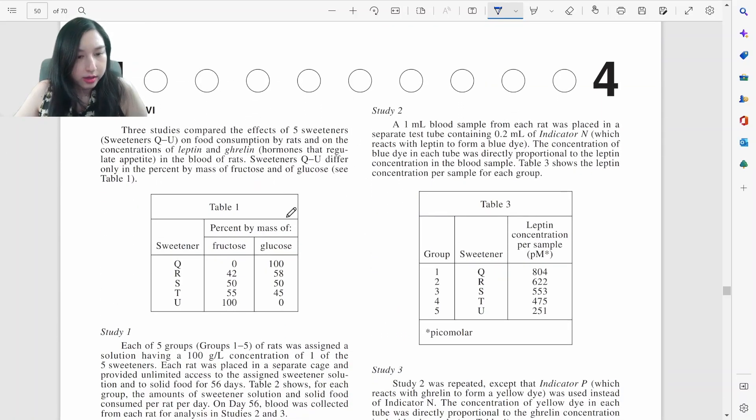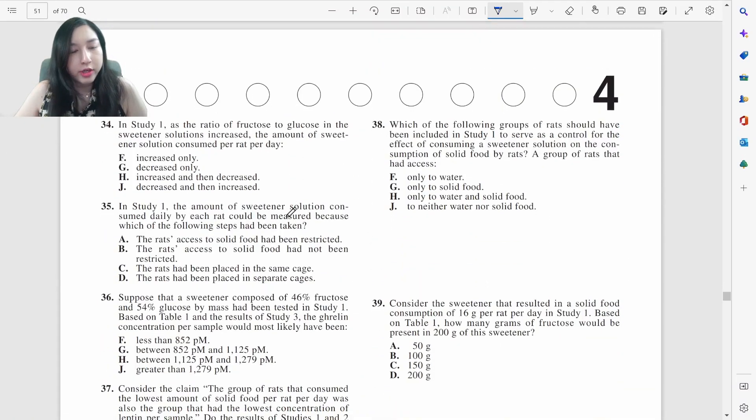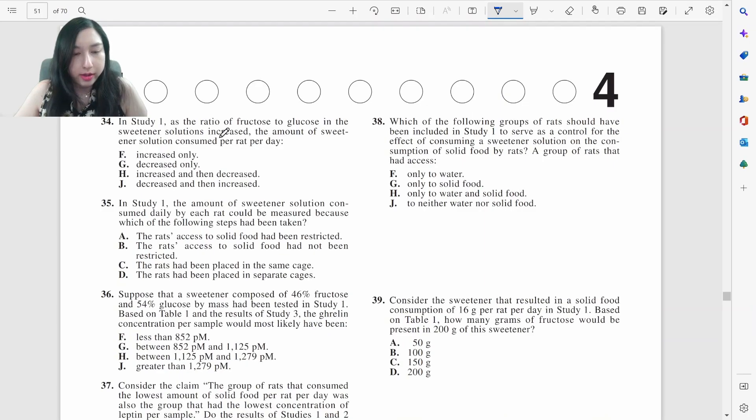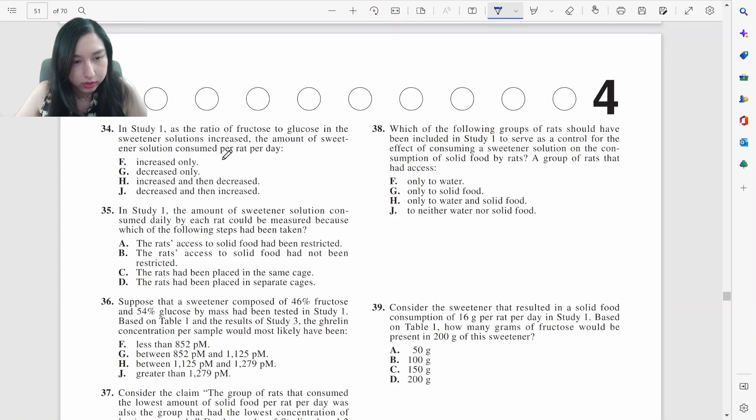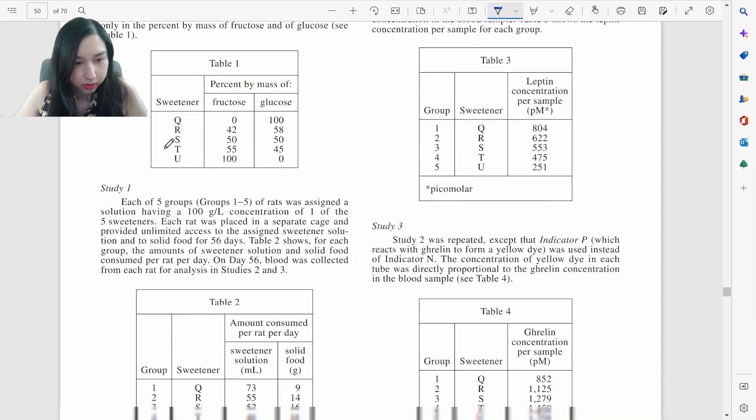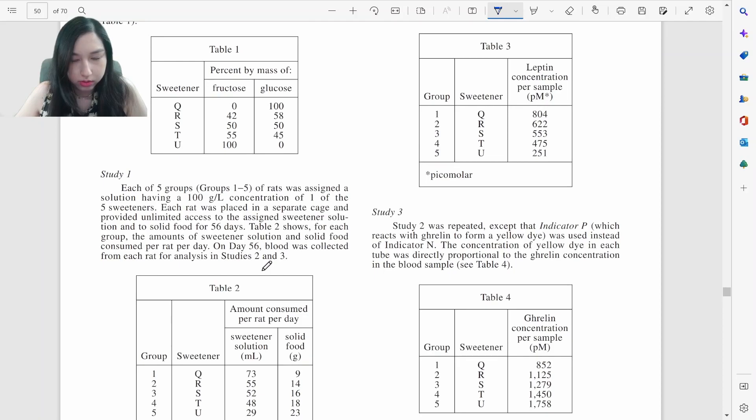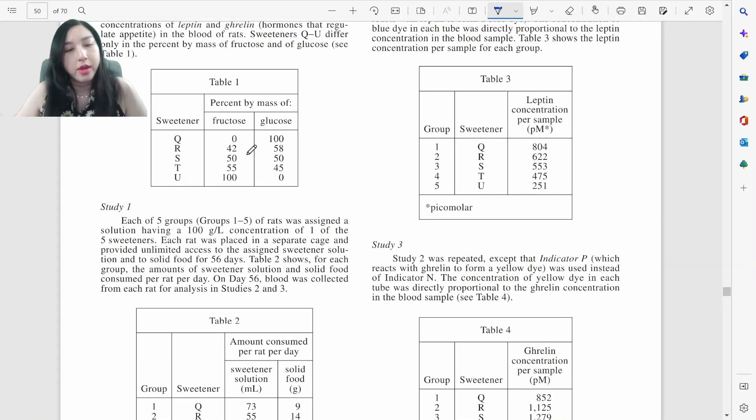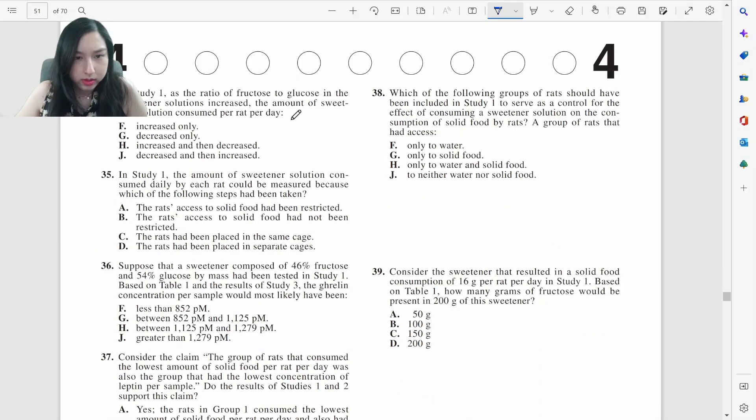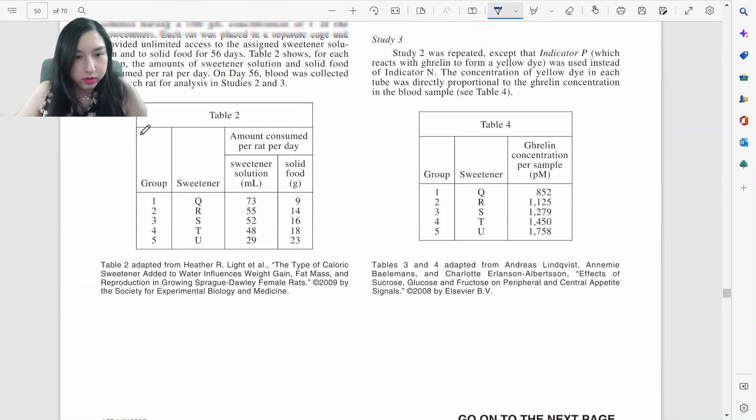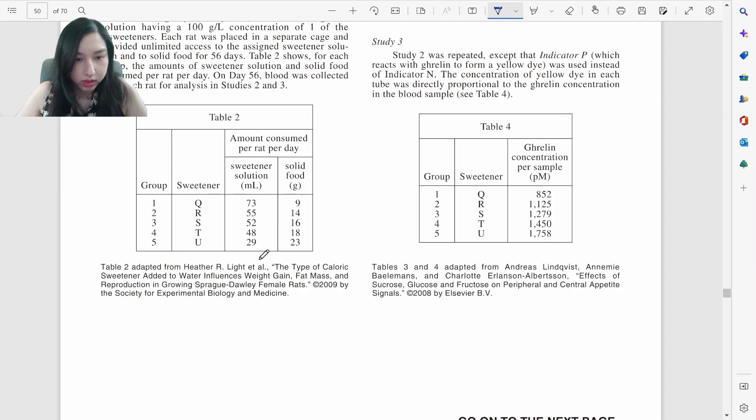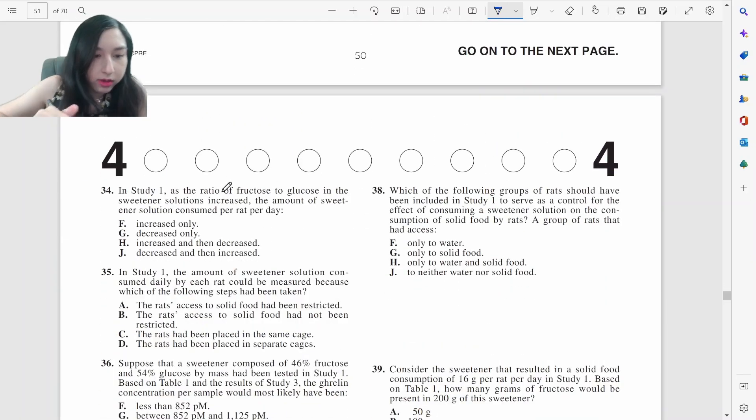Let's look at this one. Just straight to the question. In study one, the ratio of fructose to glucose as the ratio as, as fructose increase, amount of sweetener solution increase in study one, study one right here. Didn't talk about the fructose or glucose though, right here. Oh, there we go. When the fructose increase, so basically from Q to U, then the amount of sweetener solution, then amount of sweetener solution decreases. So when that increase, this decrease G.